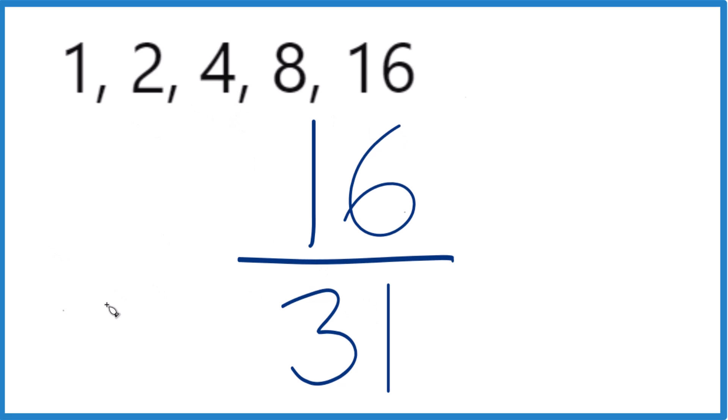For 31, the only factors we have are 1 times 31. That equals 31, but that's it.